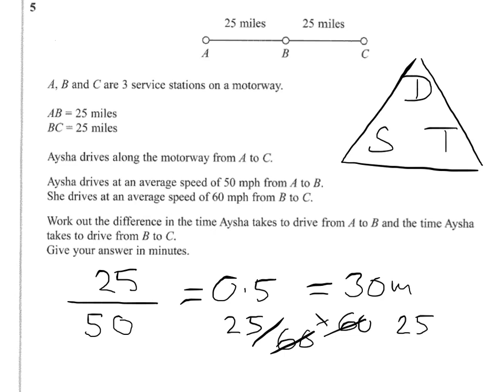Our question was to work out the difference in time, so the difference is 5 minutes. It all hinges on working out what fraction of an hour it took us to do each journey, then multiplying by 60 to convert into minutes and comparing the two times. We have 30 minutes and 25 minutes — a difference of 5 minutes.